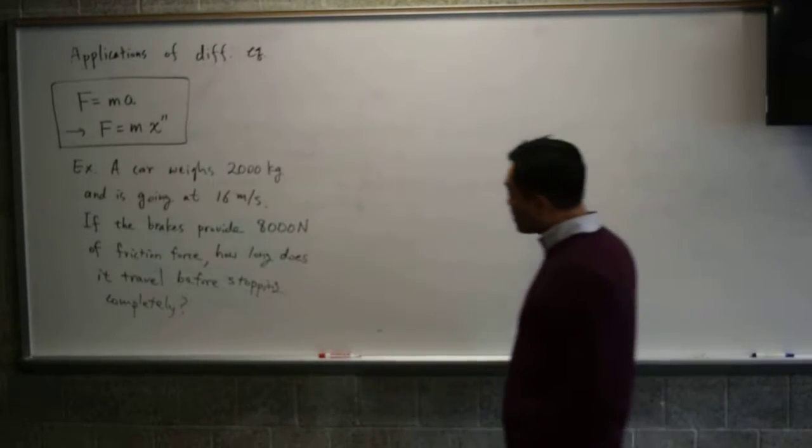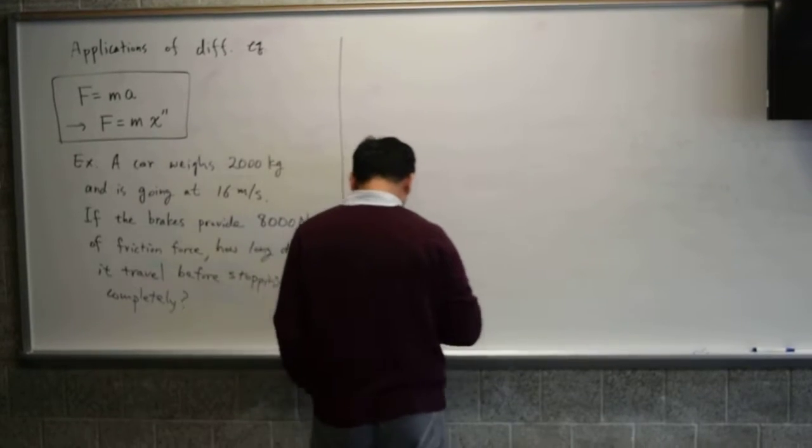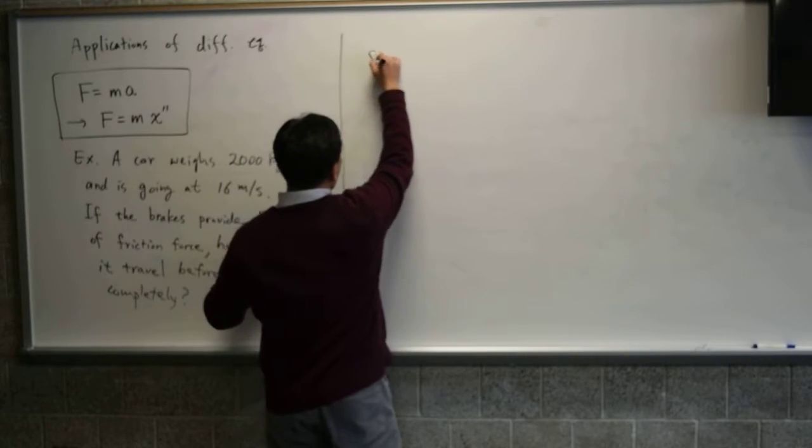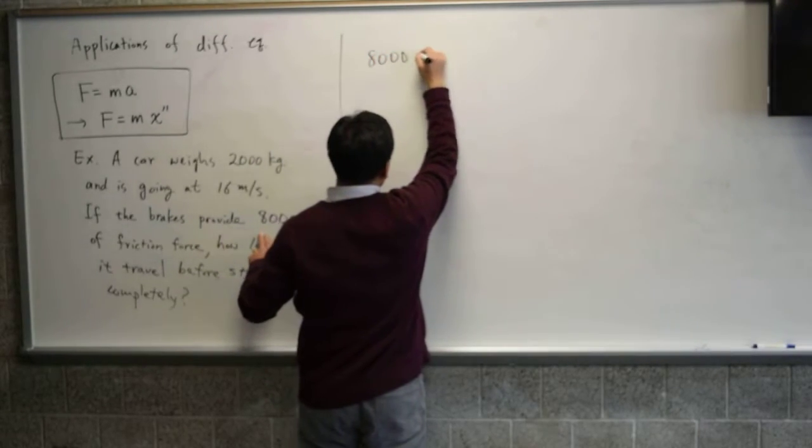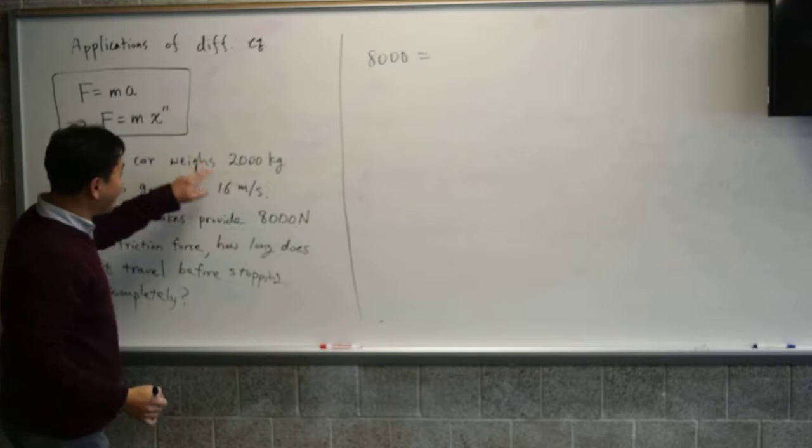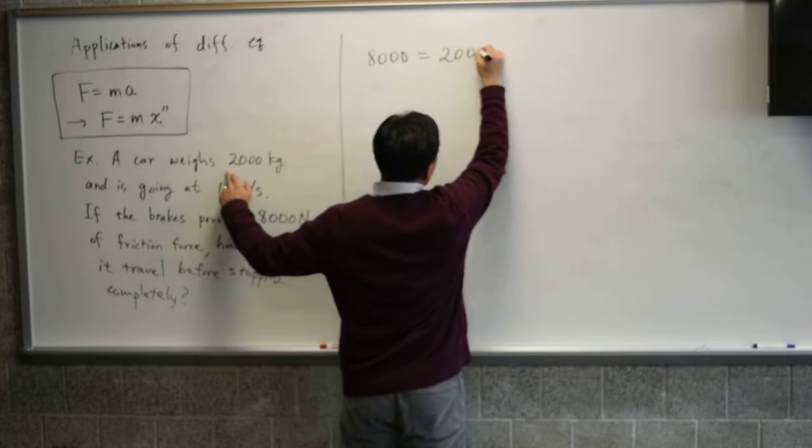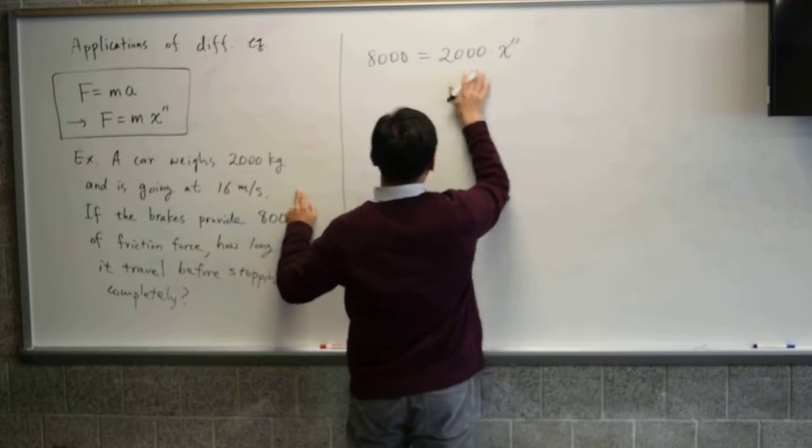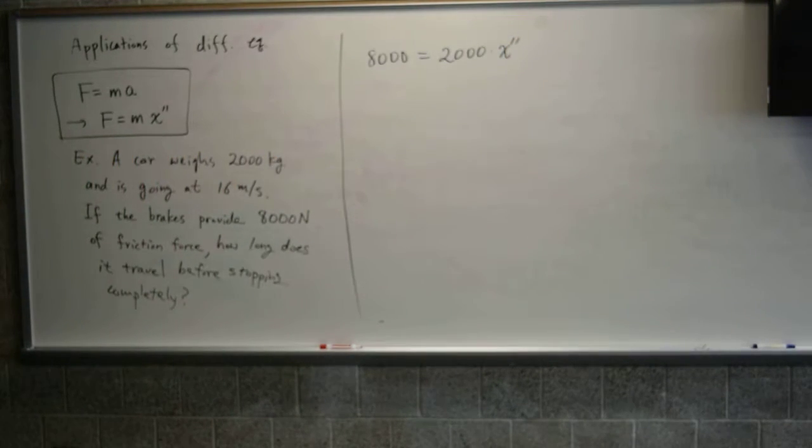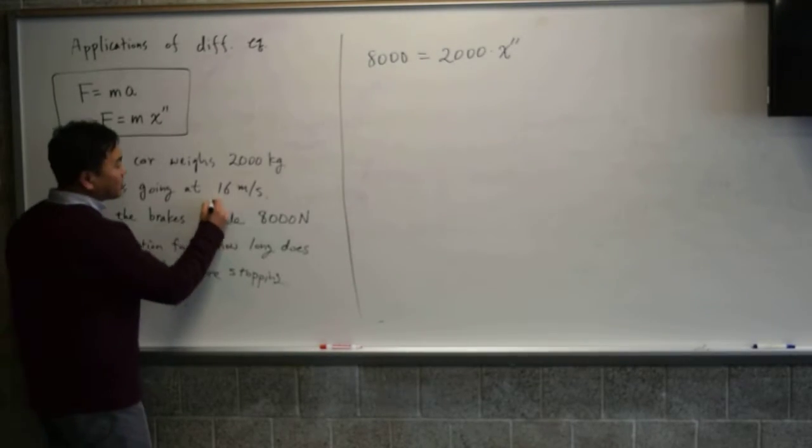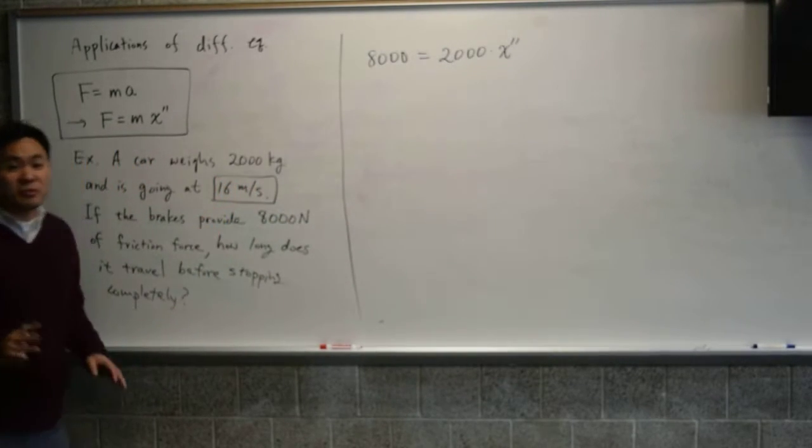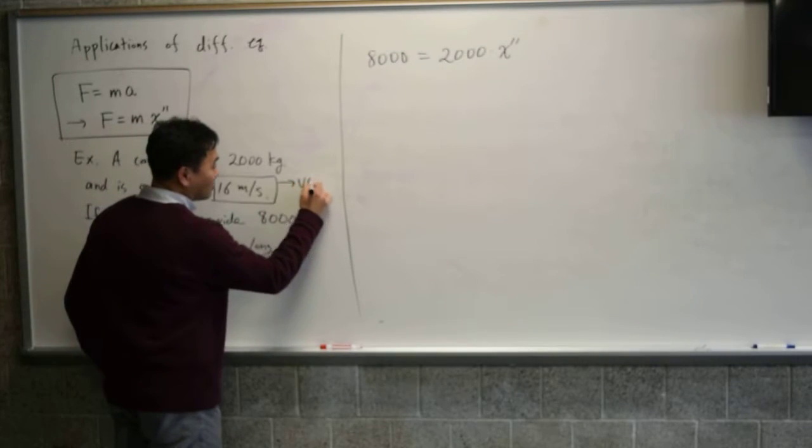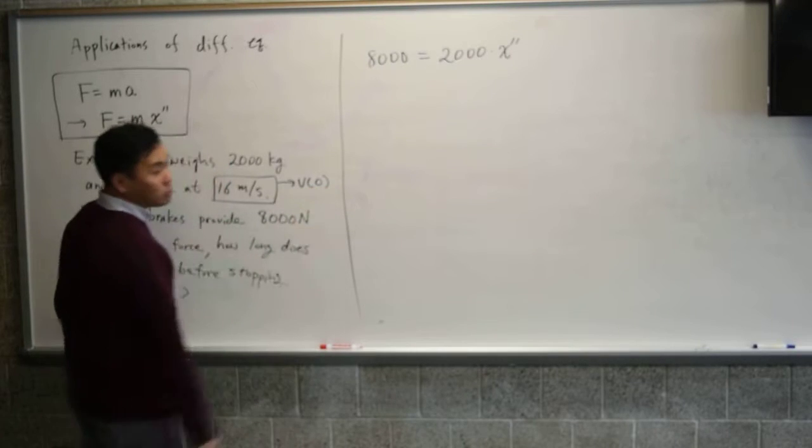So there could be some variations where the numbers are messier. Okay, so let's think about this. It's this differential equation, right? The force is 8,000 newtons and the mass is 2,000 and x double prime is what you get. Now, what is this? That's before brake was pressed, so you can think of this as the initial speed.